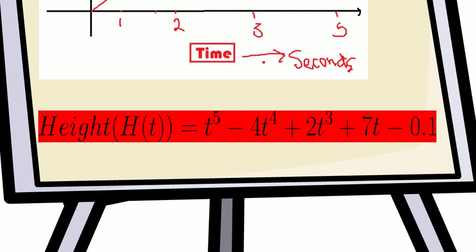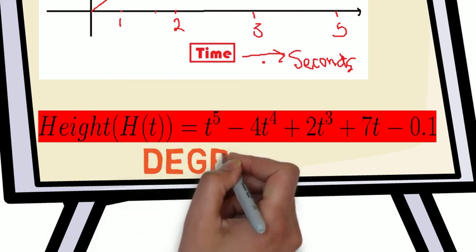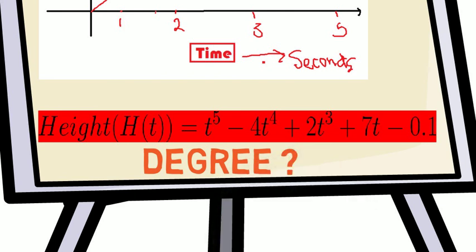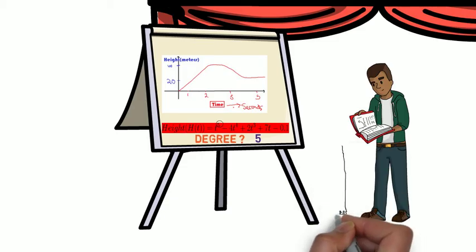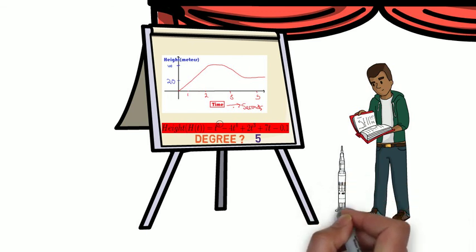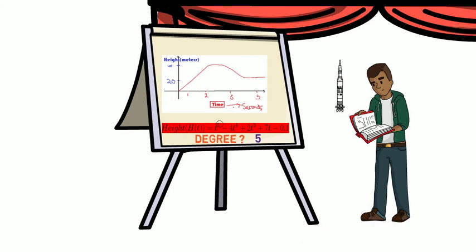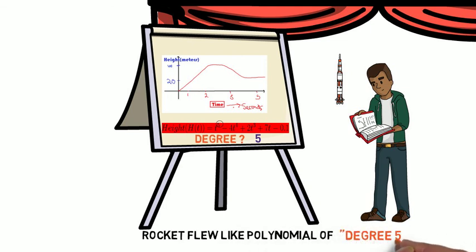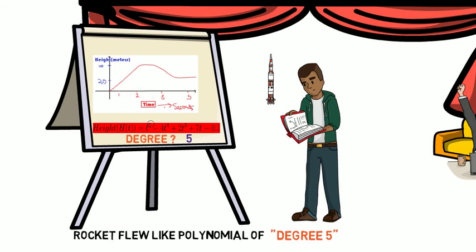See on your screen, can you tell me what is the degree of this polynomial? See we have to look for maximum power of variable t. T power maximum is here, which is 5. Hence, the degree of this polynomial is 5. Now if Matthew has to tell someone how his rocket flew, he can say the rocket trajectory was the same as polynomial of degree 5. Key takeaway is, degree helps us to identify the type of motion one object does and much more. That's all.